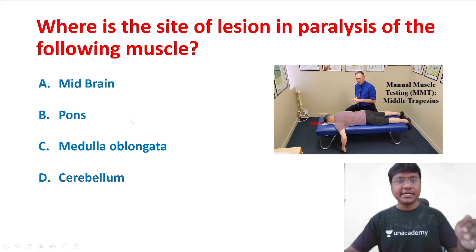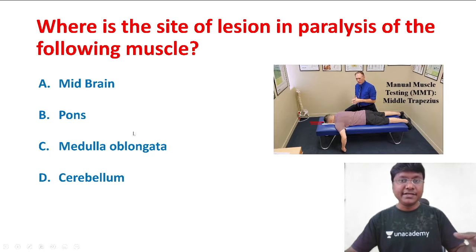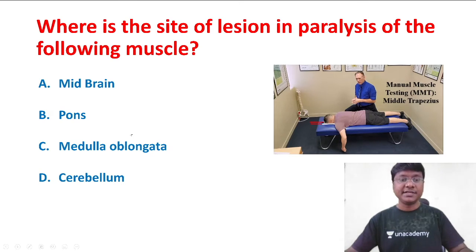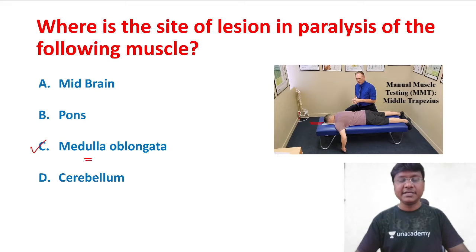The cranial nerve — the spinal accessory — is the one which supplies the trapezius. The nucleus of the spinal accessory is present in the medulla oblongata. So in order to have paralysis of the trapezius muscle, the site of lesion will be in the medulla oblongata.